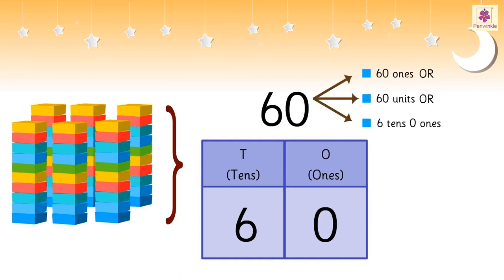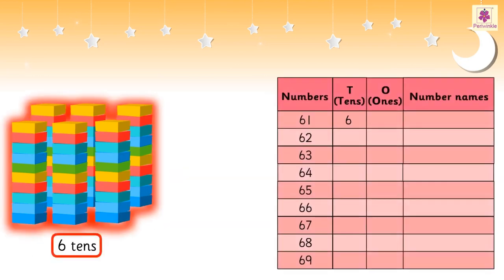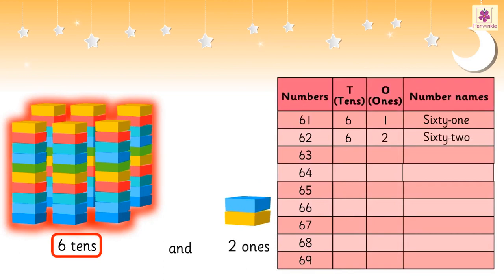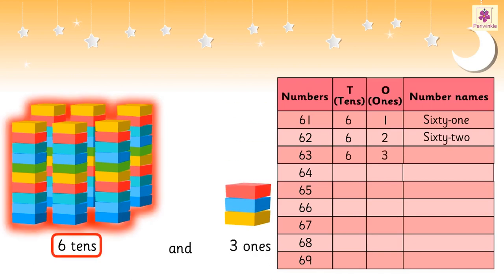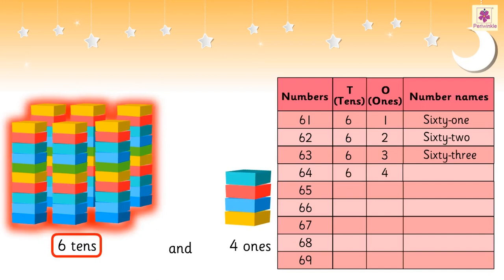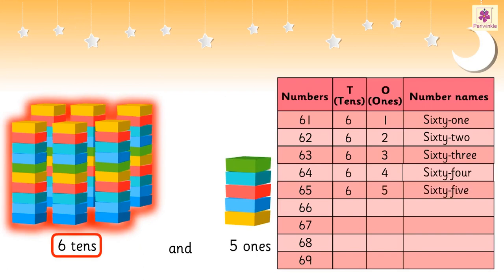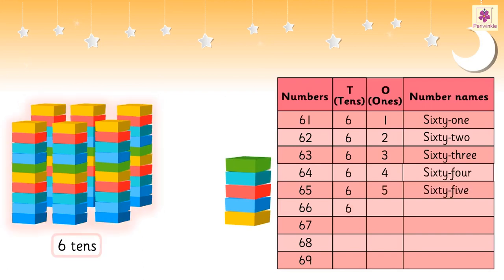Six tens and one one is 61. Six tens and two ones is 62. Six tens and three ones is 63. Six tens and four ones is 64. Six tens and five ones is 65.